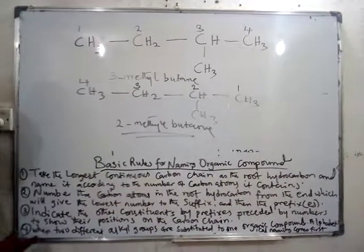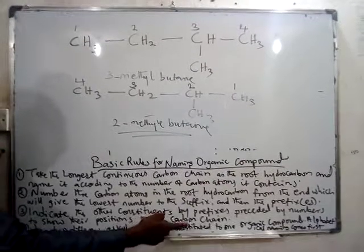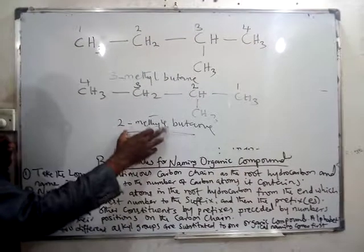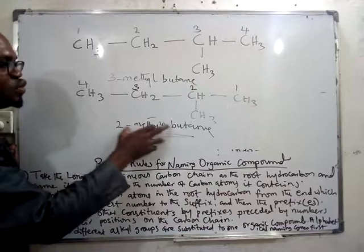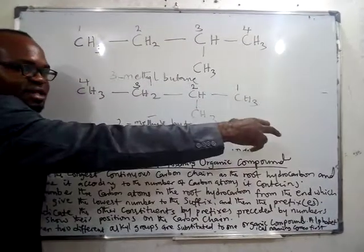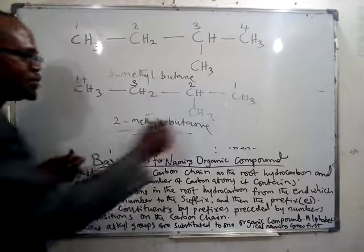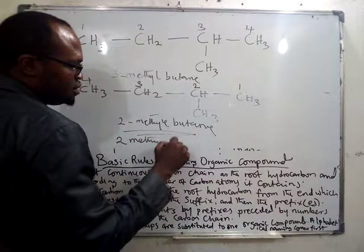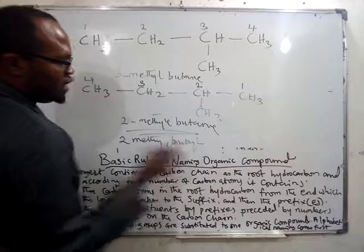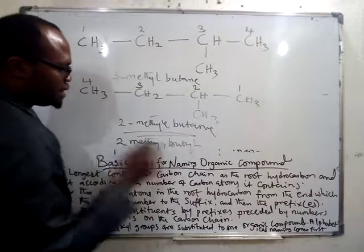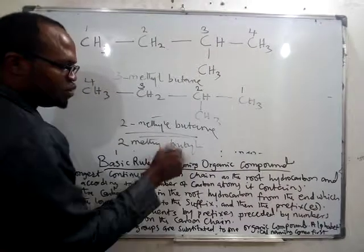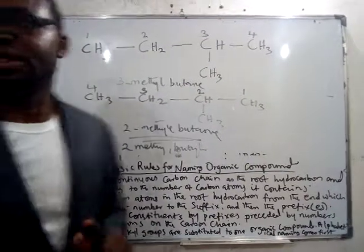And the fourth rule is when two different alkyl groups are involved. Here we only have one alkyl group — methyl — added. But maybe you have something like 2-methylbutyl-3-pentane. If you have another butyl group added, which one is supposed to come first — butyl or methyl? Butyl. It should be butyl before methyl because alphabetically, butyl comes before methyl. So you put the one that comes first alphabetically. Always check this.